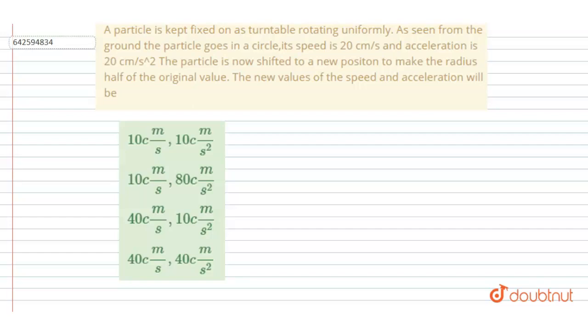The particle is now shifted to a new position to make the radius half of its original value. The new values of speed and acceleration will be what? So you see, the turntable is rotating uniformly. What does this mean?